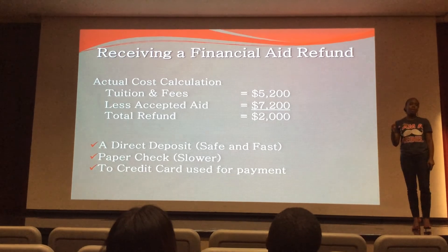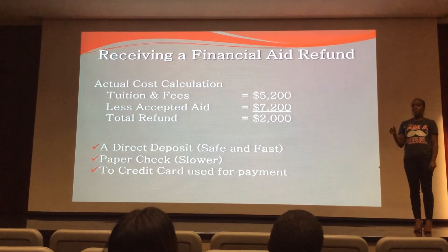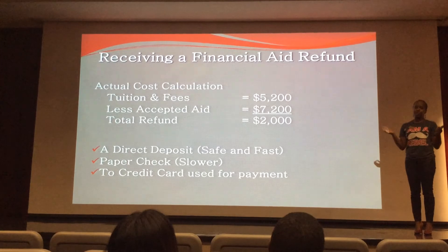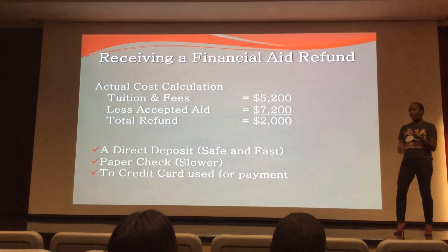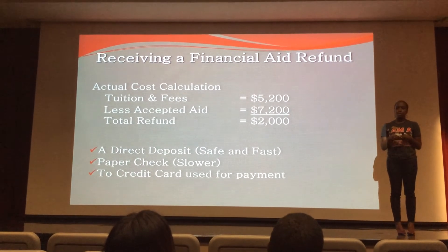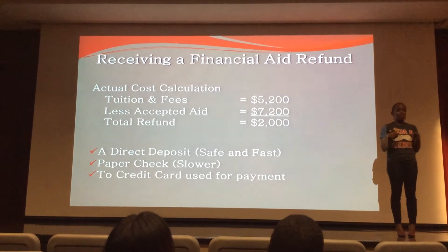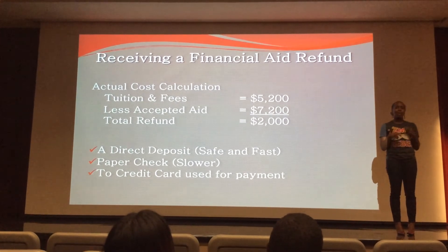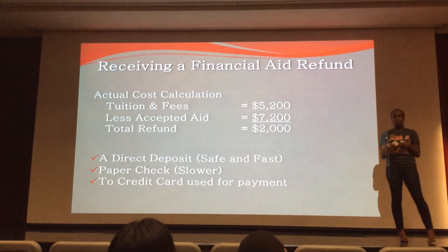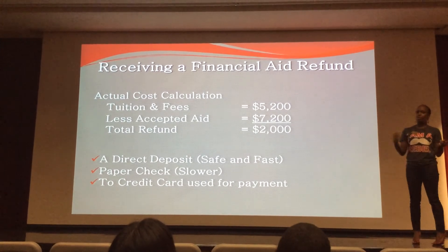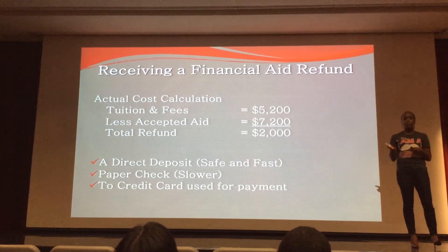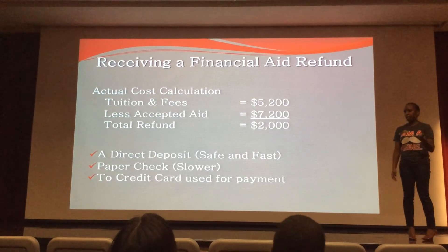If a financial aid refund is mailed to the wrong address on file, that check is potentially lost. The student will have to come into the cashier's office, get a stop payment on the check, get it reissued, and have it mailed to their new address — which may not arrive in time if they were counting on it for books. So if your student has a bank account, encourage them to sign up for direct deposit. If you've used a credit card to make payments to the student's account, the refund may also be put back on that credit card.